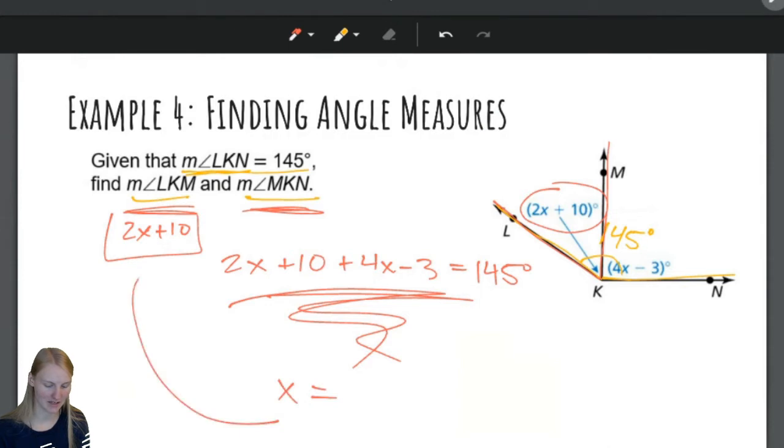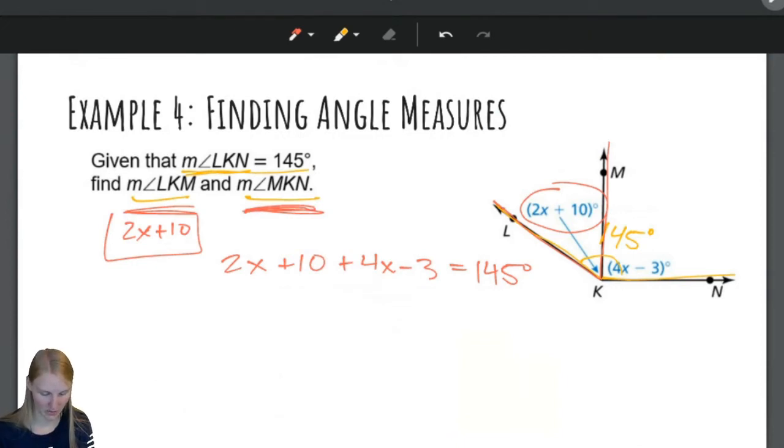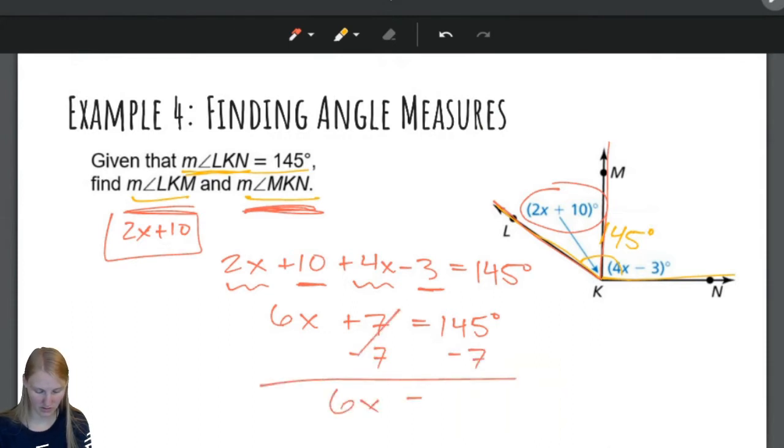Okay. So, let's solve this for x. Then we can put x into this, and we can figure out what LKM is. And I think we can do the same thing with angle MKN as well. So, 2x, let's see. I can combine my apples and oranges. So, I can put the 4x's together, excuse me, I can put the x's together and the numbers together. So, 2 plus 4 is 6x, and 10 minus 3 is 7. All of that is still equal to 145. And now I'm going to solve for x, so I'm going to get rid of the 7 on both sides. 6x equals 145 minus 7 is 138. And dividing by 6 on both sides gives me that x is equal to 23.